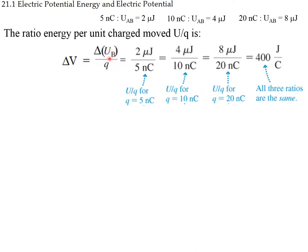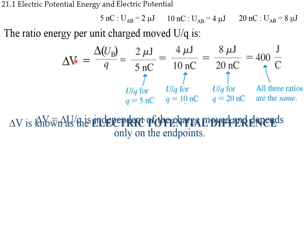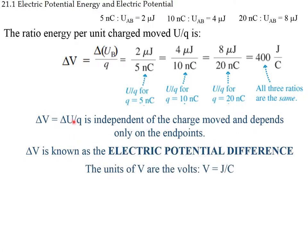This is one of the advantages of dealing with electric potential as opposed to electric potential energy. Electric potential energy depends on what charge we're moving, whereas electric potential is independent of it. The electric potential is defined as electric potential energy per unit charge. Delta V is known as the electric potential difference, relating two points, and its units — joules per coulomb — are volts. Now you know what a volt is.